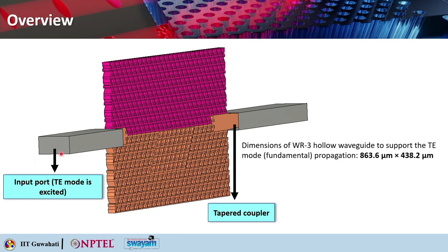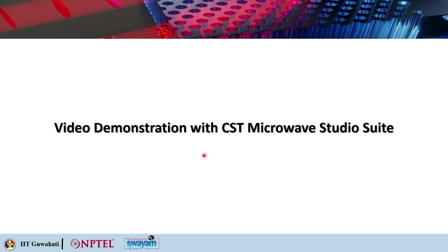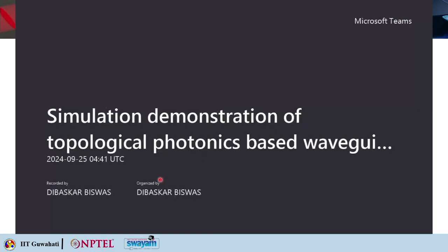You can have the input port here and the output port there. The dimensions of this WR3 hollow waveguide are chosen so that they can support the TE mode, the fundamental one, because that is the one being excited. The width and length dimensions of the hollow waveguide are given here. Now we will look into the video demonstration of the same using CST Microwave Studio Suite. Our TA for the course, Dibaskar Biswas, will take you through this video demonstration, giving you a complete idea of how to design topological photonics based waveguides from scratch.